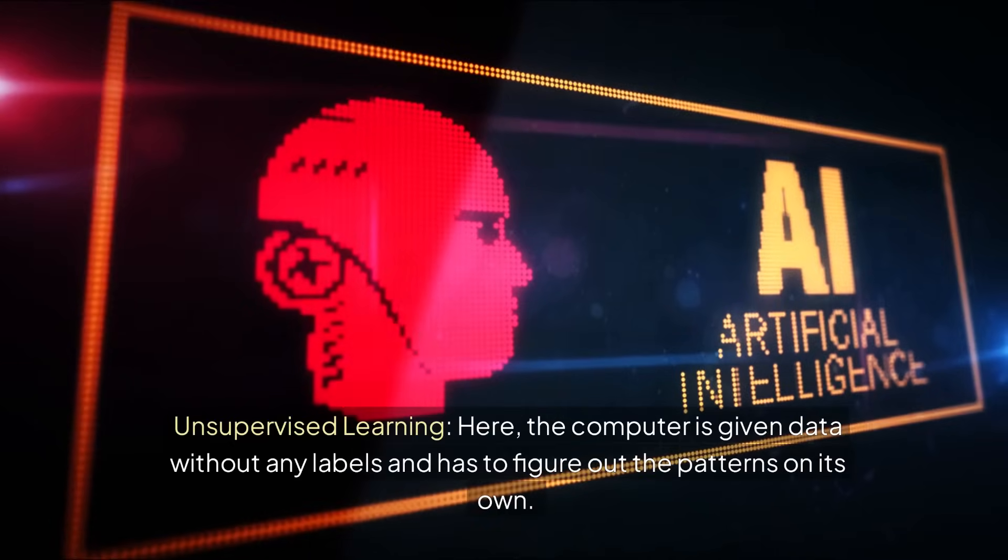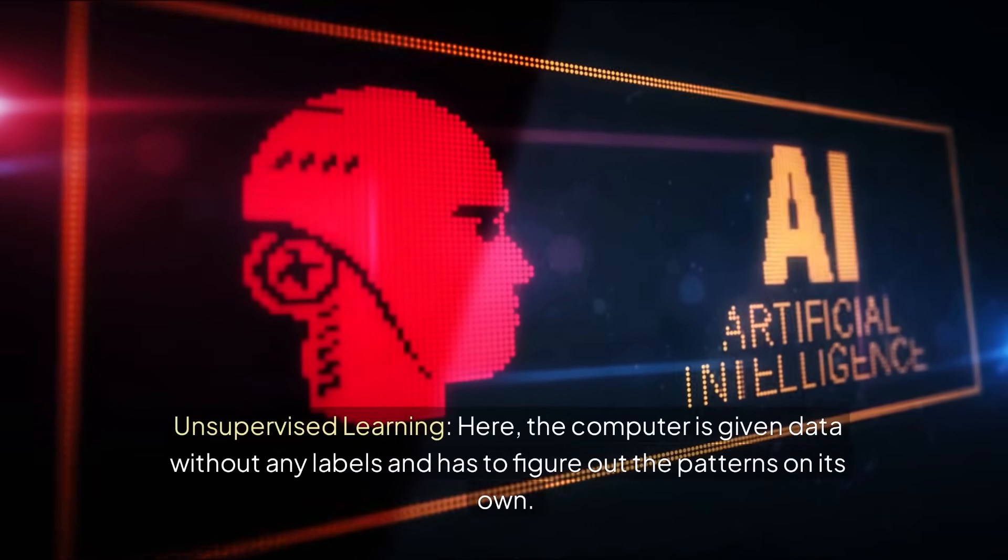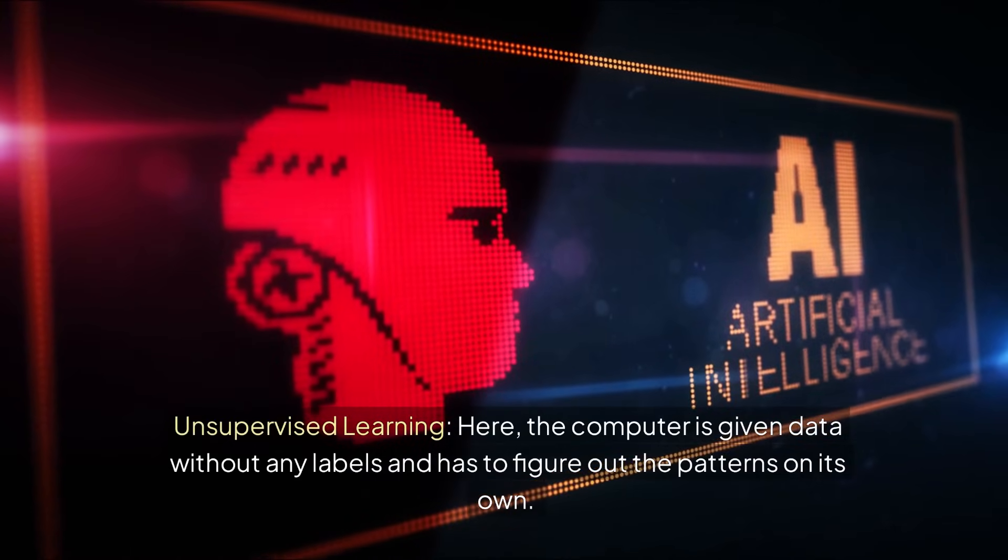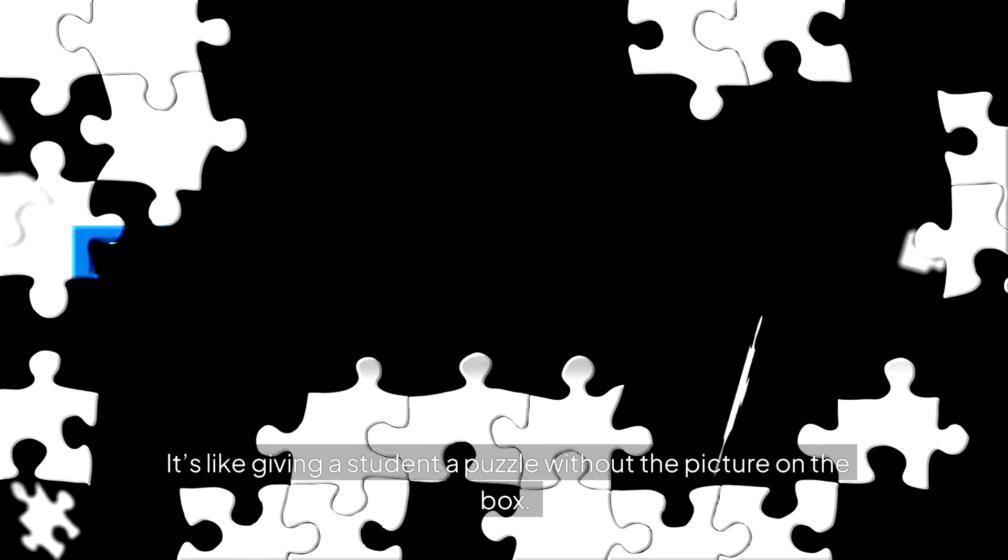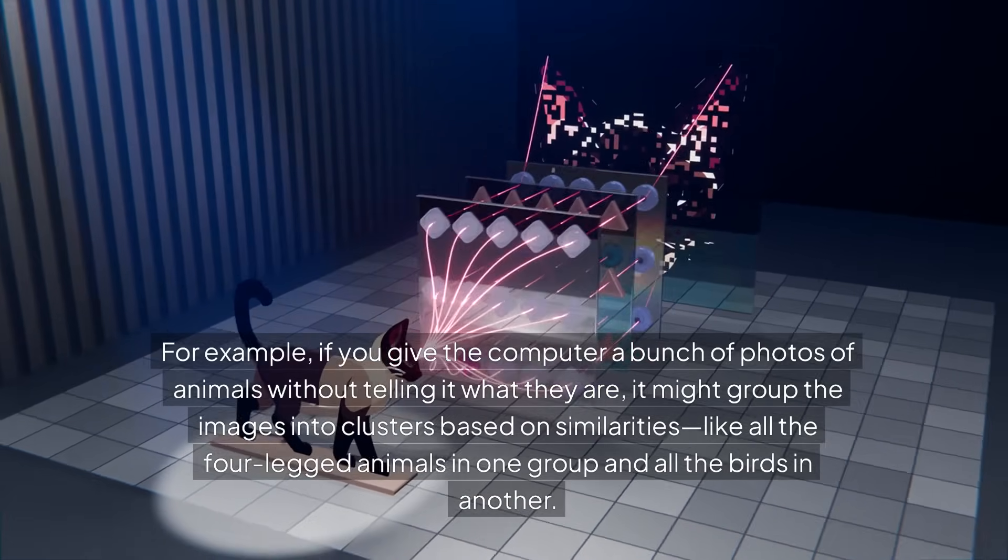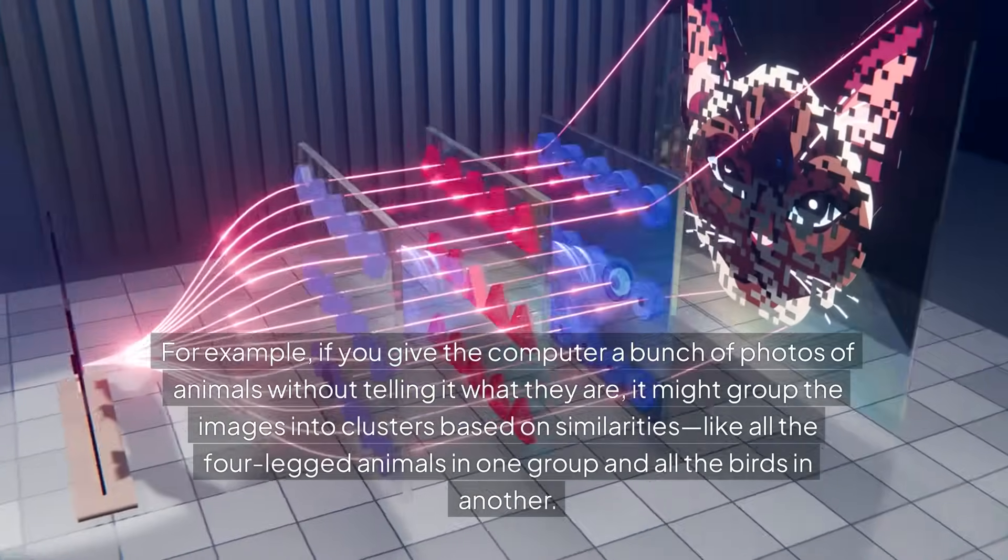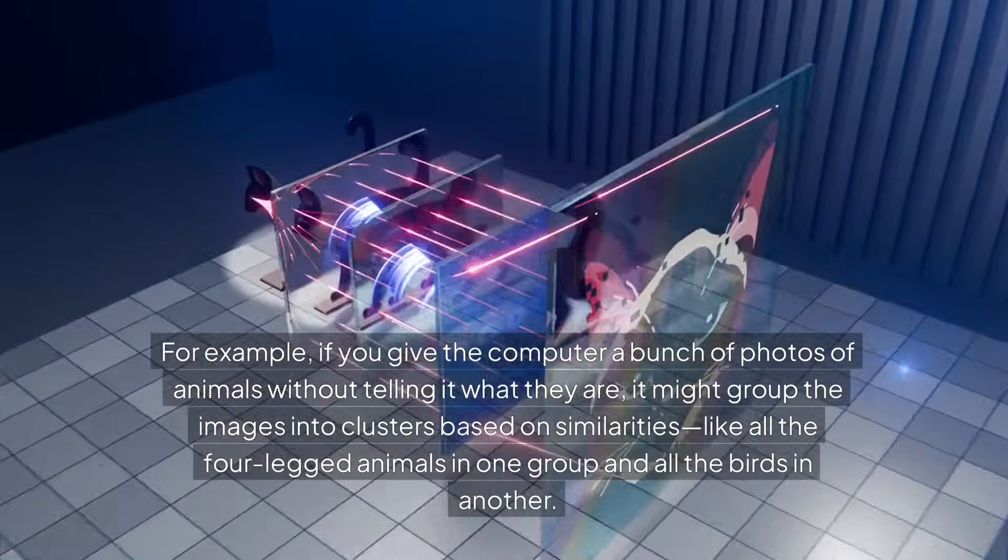Unsupervised learning: here the computer is given data without any labels and has to figure out the patterns on its own. It's like giving a student a puzzle without the picture on the box. For example, if you give the computer a bunch of photos of animals without telling it what they are, it might group the images into clusters based on similarities, like all the four-legged animals in one group and all the birds in another.